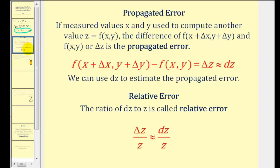First we're going to talk about propagated error. If measured values of x and y are used to compute another value z, then the difference of the function values, or delta z, is called the propagated error. In order to estimate the propagated error, we can use differential z instead of the true delta z. Relative error is very closely related to this — the ratio of delta z to z, which is approximately equal to differential z divided by z, is called the relative error. This value gives us a percent of error rather than just a numerical value, giving us a better idea of whether the amount of error is acceptable or not.